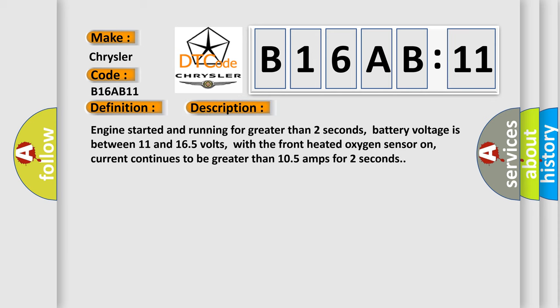Engine started and running for greater than 2 seconds, battery voltage is between 11 and 165 volts, with the front heated oxygen sensor on, current continues to be greater than 105 amps for 2 seconds.